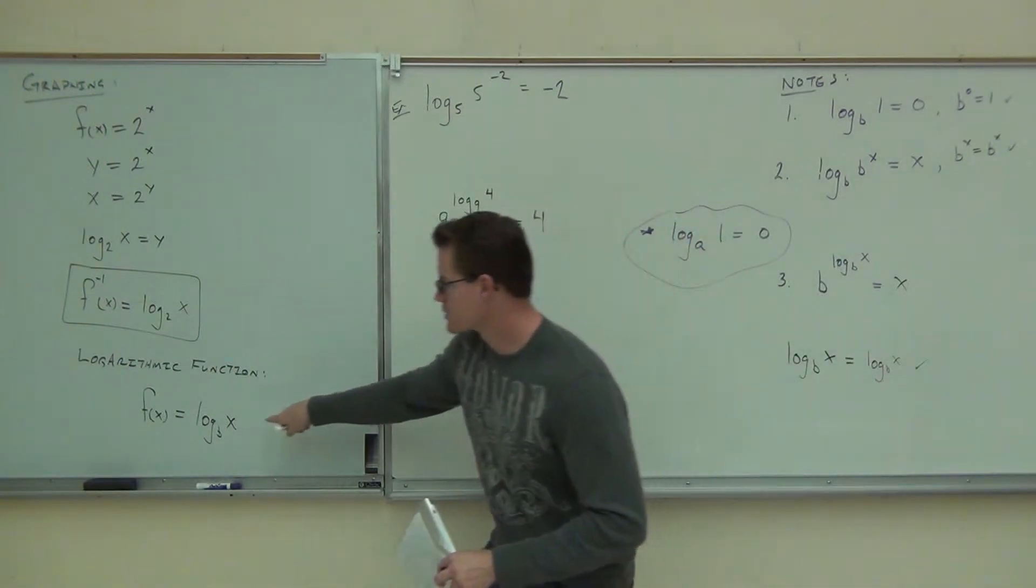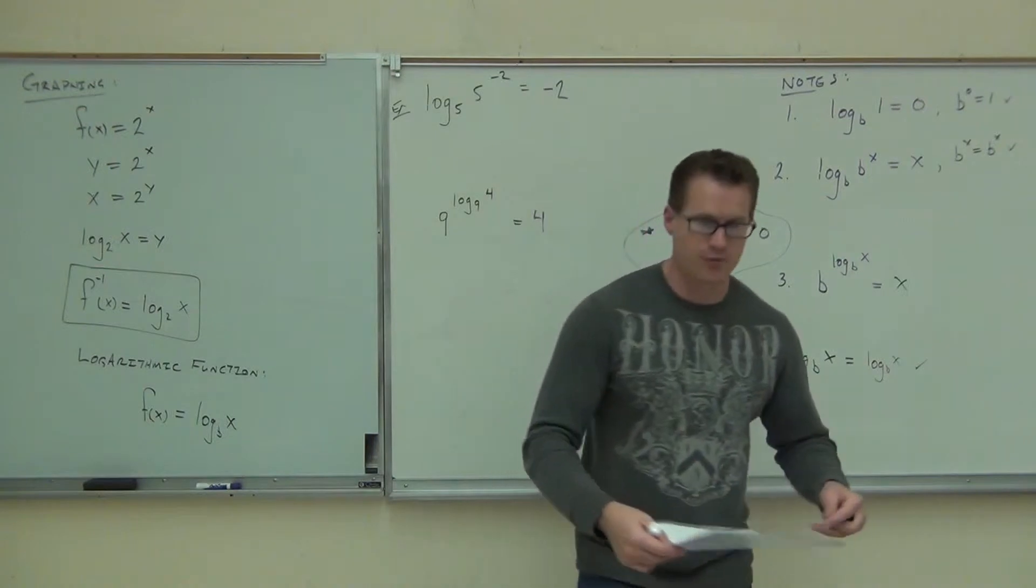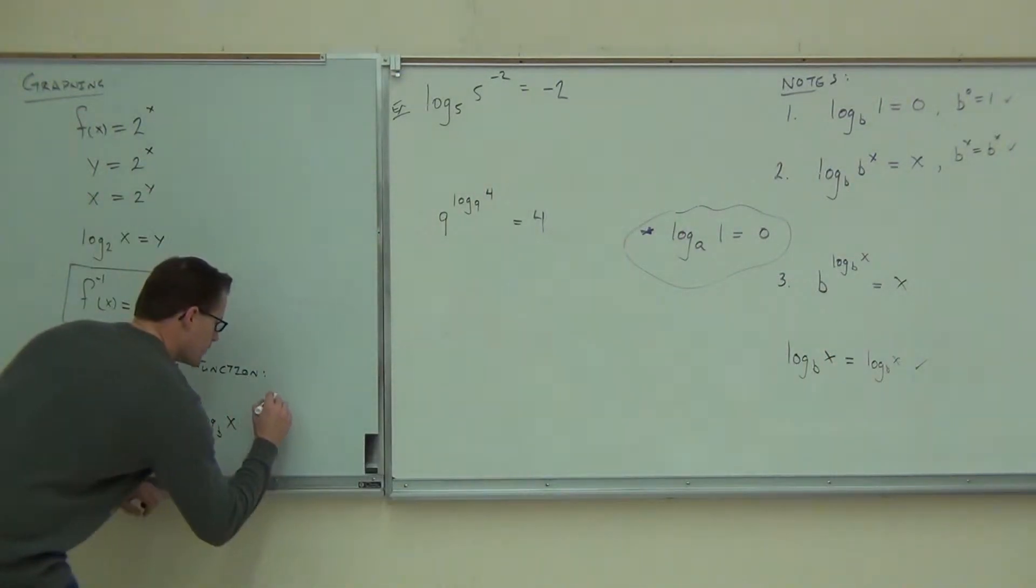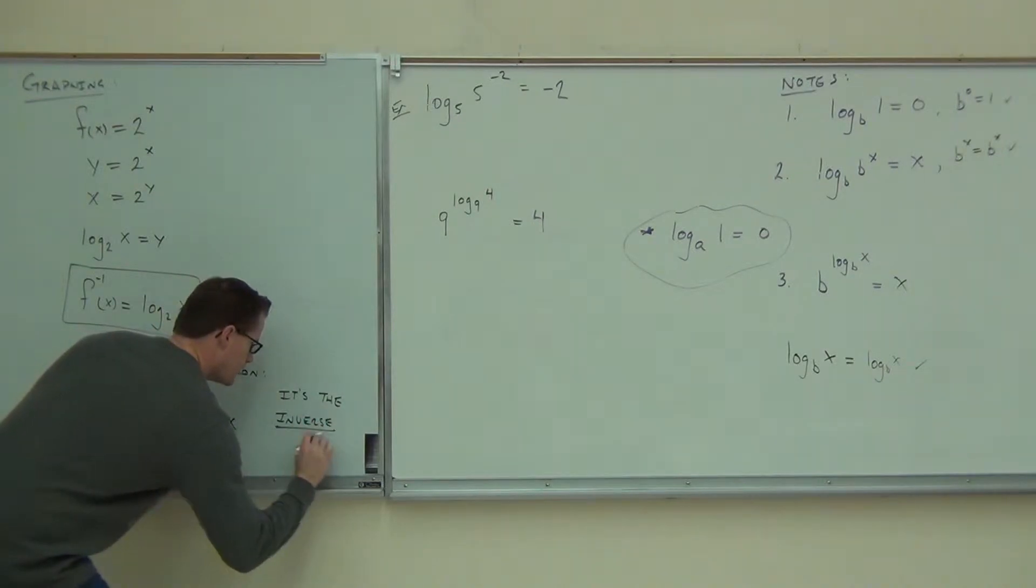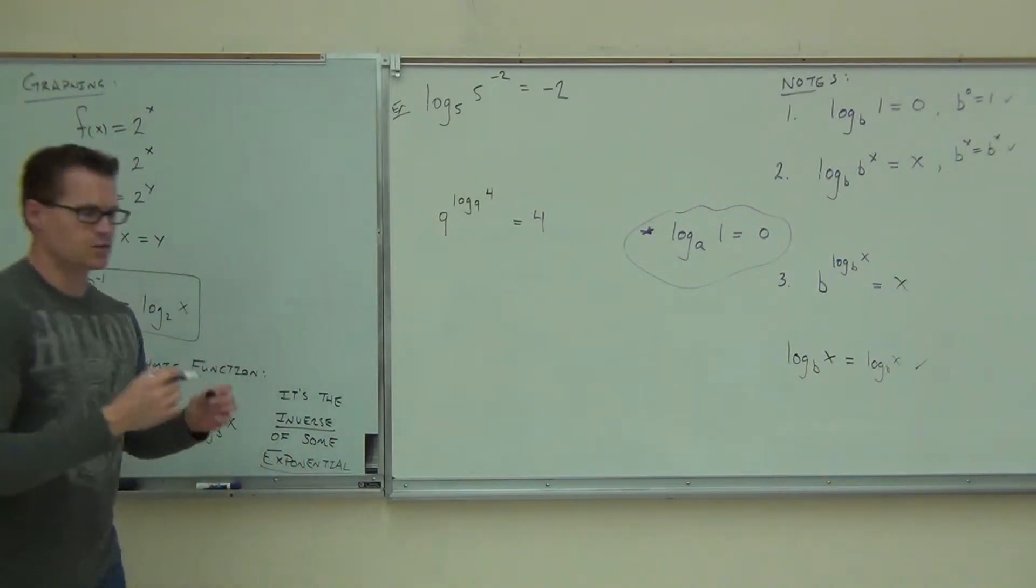So in every case, a logarithmic function will have a logarithm. It will have some sort of base. But this is always an inverse of some exponential. It's the inverse of some exponential function.